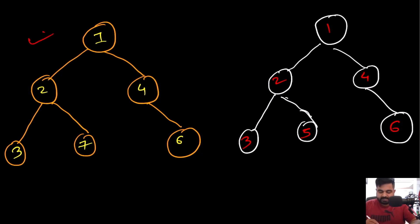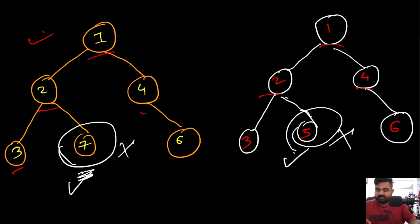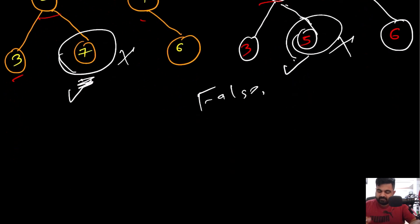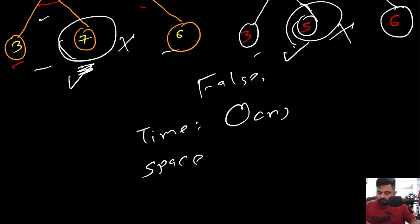In a scenario where trees don't match, for example where all nodes are the same except two particular nodes, the moment we iterate and reach those mismatched positions we return false immediately. The time complexity of this iterative approach is O(n) because we iterate over every single node in both trees. The space complexity is O(log n) because this is a binary tree.